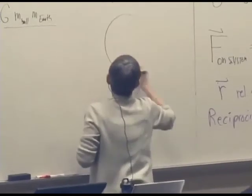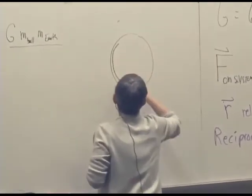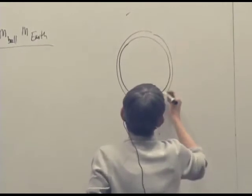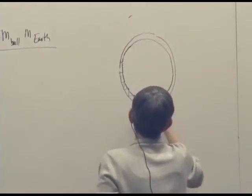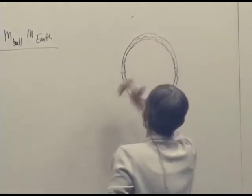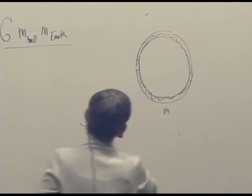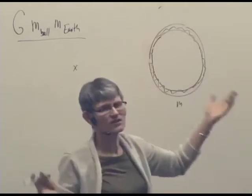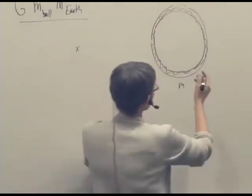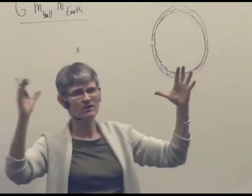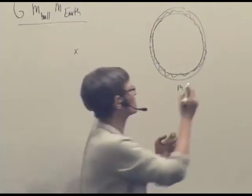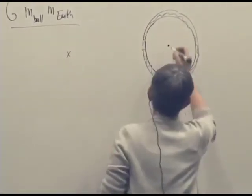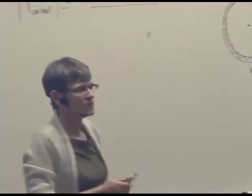And it turns out that if you have a uniform density hollow sphere of mass M, to an object outside it, it looks as it has exactly the same gravitational interaction as if Superman had come along and crushed the entire sphere down to a tiny point at its center.